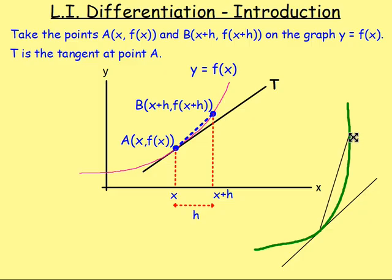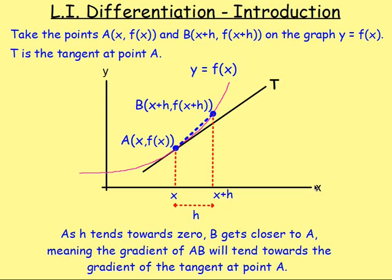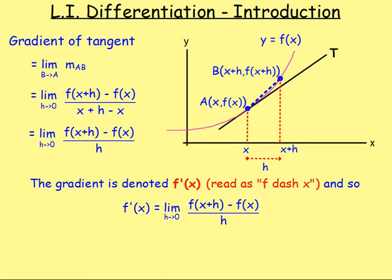You can see there they're totally different, and as the points get closer the gradients become equal. As H tends towards zero — in other words, as the points get closer together, as point B gets closer to A — the gradient of AB will tend towards the gradient of the tangent at point A. So if you wanted to work out the gradient of that tangent, you could work out the gradient of this line using your formula: y2 minus y1 over x2 minus x1, as that distance H tends towards zero. If you do that, you end up getting this formula here.